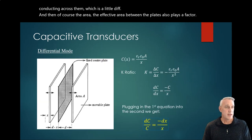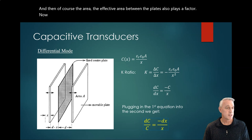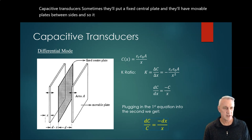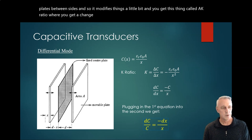And then of course the effective area between the plates also plays a factor. Now capacitive transducers - sometimes they'll put a fixed central plate and they'll have movable plates between sides. So it modifies things a little bit, and you get this thing called a k ratio where you get a change in capacitance with a change of x.